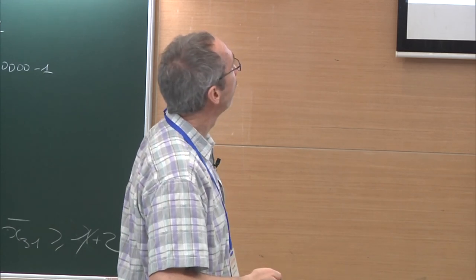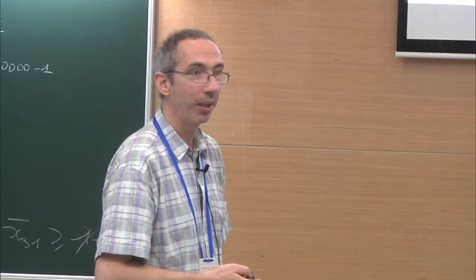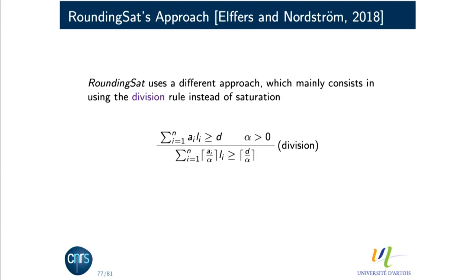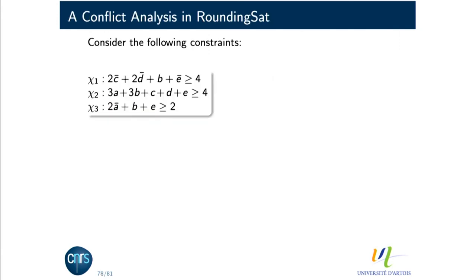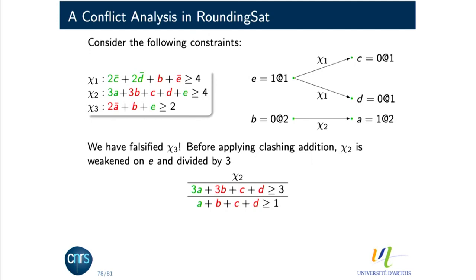Do irrelevant literals appear in practice? They do not appear in original problems. But in SAT4J, we took many benchmarks from the 2016 evaluation, dumped the first 5,000 learned constraints, and counted irrelevant literals. In some instances, you can have up to 10,000 irrelevant literals in those 5,000 constraints. Some instances have very few, but the problem is real. A new rounding SAT solver uses division rules instead of saturation, which partially addresses this.